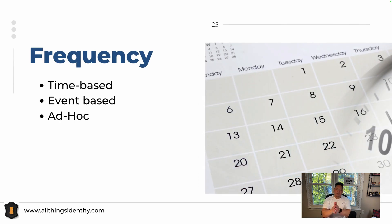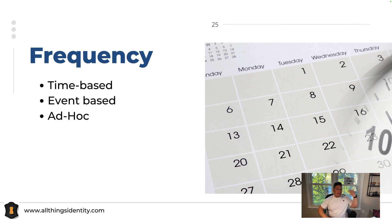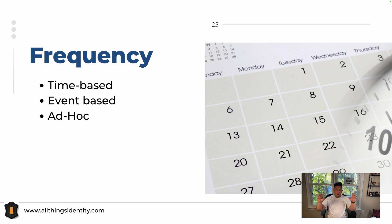Frequencies. I talked about the different ways. We have time-based — very simple. You do it annually, you can do it quarterly, you can do it twice a year, you can do it monthly. It all depends. That's the most common method or frequency in terms of a certification campaign.